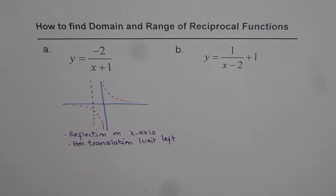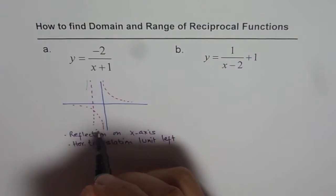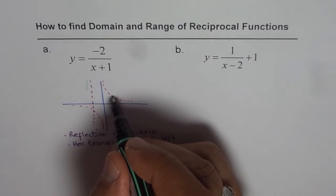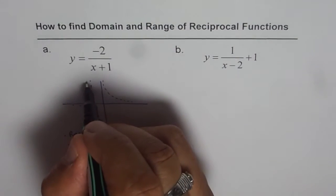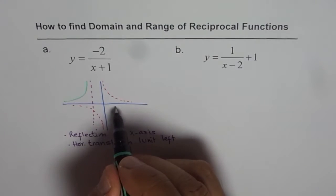And the function really gets reflected. So what we get here is reflection kind of like this. So this part reflects up, that part comes down. So we have minus 2 over x plus 1, which is kind of like this.